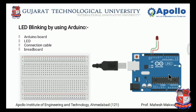Before starting this practical, let me tell you — this is the beginning of the IoT practical. It's something like the 'Hello World' in Java or C programming. So, Arduino is nothing but a small circuit, or you can say a control unit. With the help of this control unit, we can control electronic devices like an LED and other devices. Here we are focused on LED blinking.